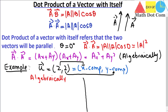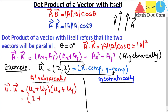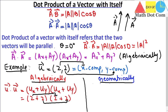Keep in mind that when finding the dot product of a vector with itself, theta is always zero degrees because both vectors are parallel. Algebraically, u dot u equals (ux + uy) times (ux + uy). The x-component of u is 2 and the y-component is also 2, so we get 2 squared plus 2 squared, which equals 4 plus 4 equals 8.